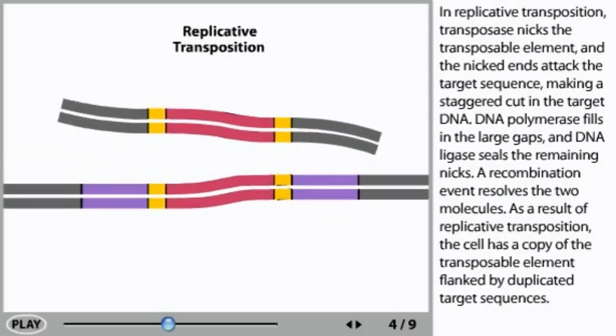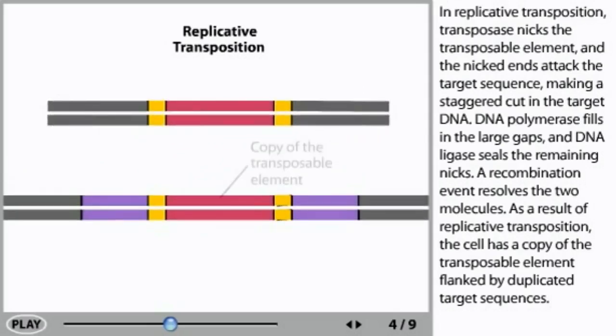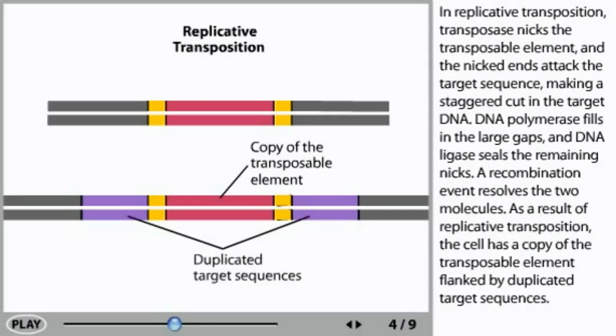As a result of replicative transposition, the cell has a copy of the transposable element flanked by duplicated target sequences.